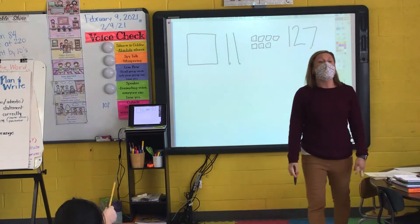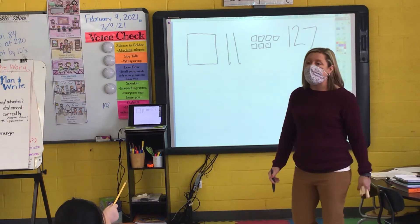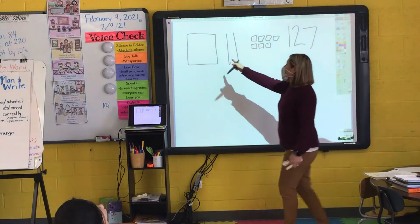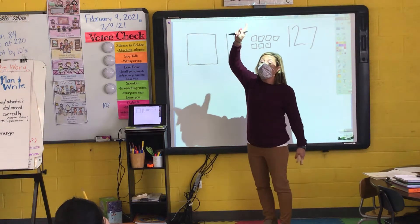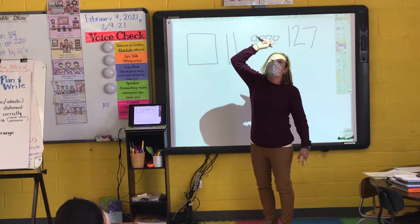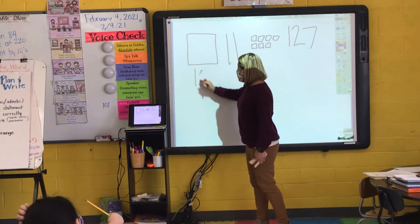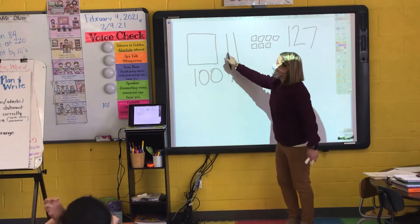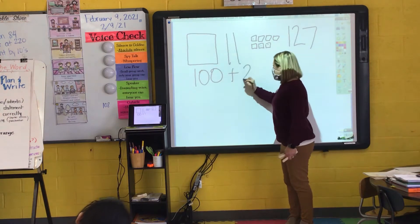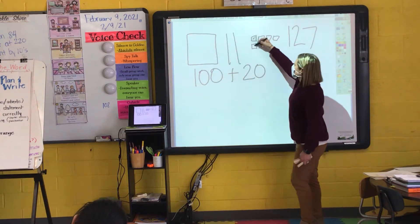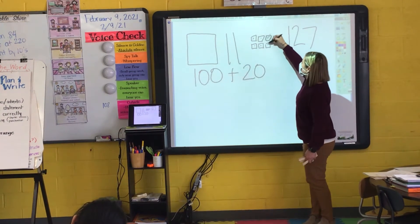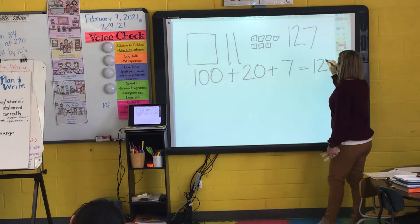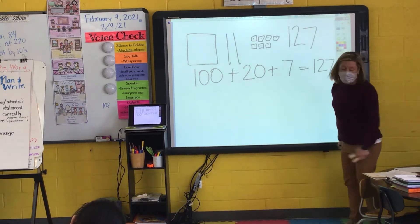When I write the number 127 in expanded form, I think to myself: how many hundreds do I have? I have one, so I write 100. Plus 20. Plus 7 equals 127.